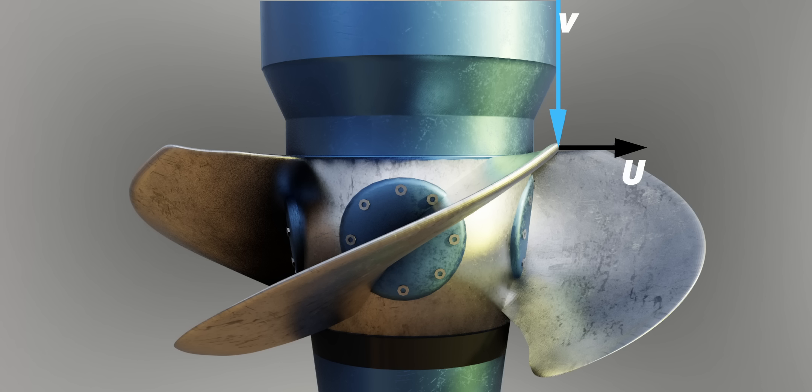The runner speed will be maintained, since the frequency of the electricity produced must be constant. Now, let's find out the relative velocity of the fluid. This is the velocity the blade is experiencing. The relative velocity angle has changed drastically.